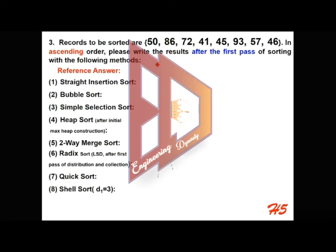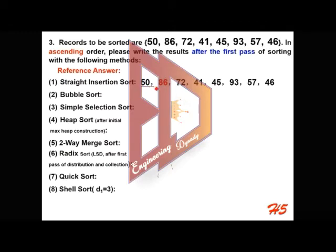The records to be sorted are given in ascending order. After the first pass of sorting using straight insertion sort, only the first two records are of interest. After the first pass, these first two form a sorted sublist, and all the other records will just copy there. This is the result.